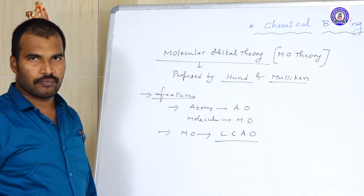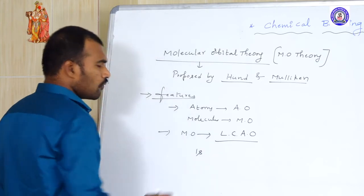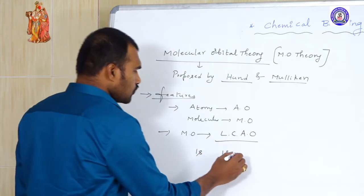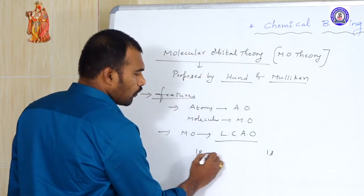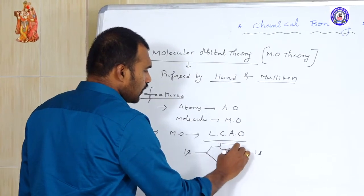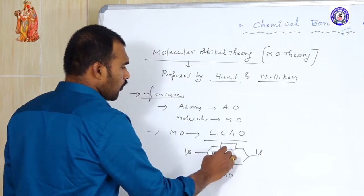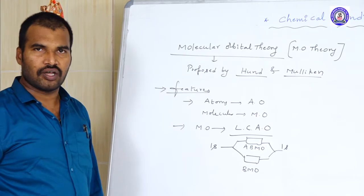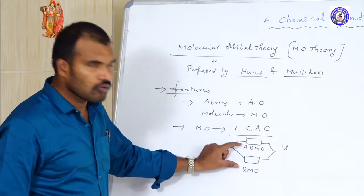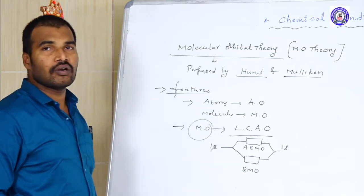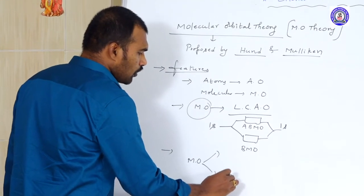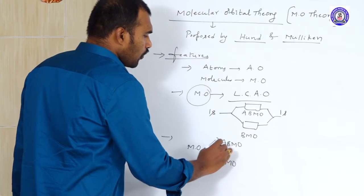What is the linear combination of atomic orbitals? When one atomic orbital is combined — overlapping with another atomic orbital — they produce two orbitals. One is a bonding molecular orbital and the other is an anti-bonding molecular orbital. So when two atomic orbitals combine linearly, they produce new orbitals called molecular orbitals, which are of two types: bonding and anti-bonding.